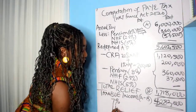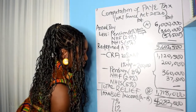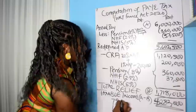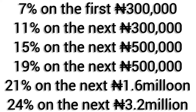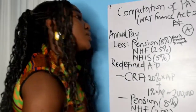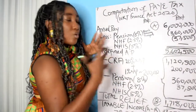So ₦4,282,000 is what you're going to apply tax on, using the progressive tax bands: 7% on the first ₦300,000; 11% on the next ₦300,000; 15% on the next ₦500,000; 19% on the next ₦500,000; 21% on the next ₦1.6 million; then 24% on the next ₦3.2 million. Any balance remaining will be taxed at 24%.